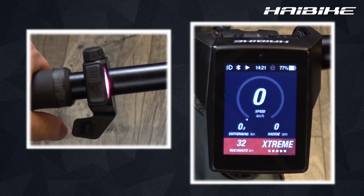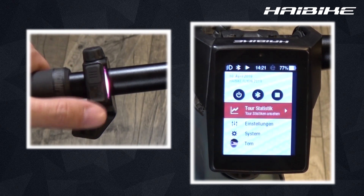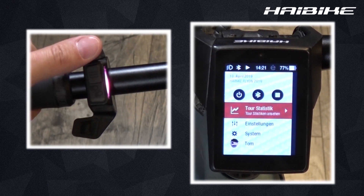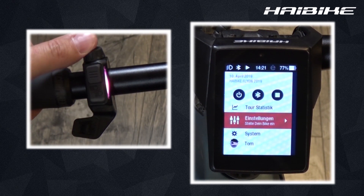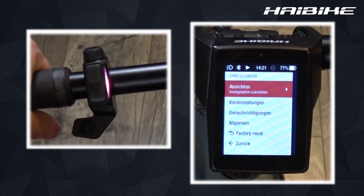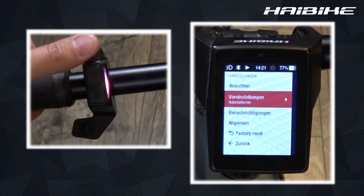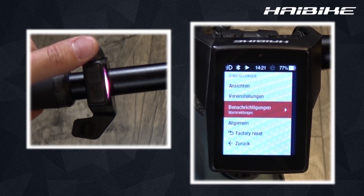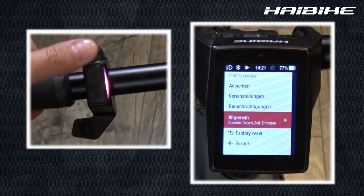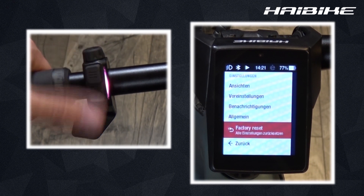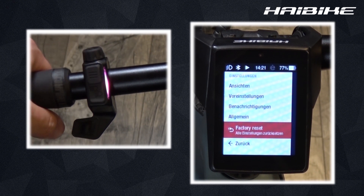My Flyon has many settings I can customize according to my exact preferences. You just go to the settings menu and then you can adjust your view. There are pre-settings, messages, general settings, factory reset — setting the bike back to how it was when I first started up the system.